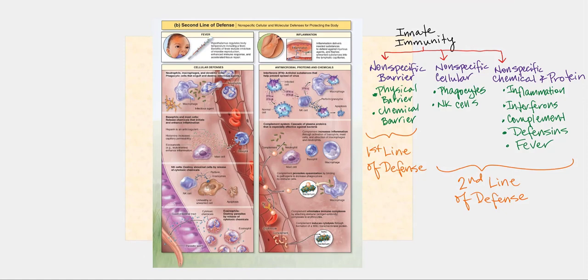This image shows us the second line of defense, both nonspecific cellular and nonspecific chemical and protein defenses. We can see our macrophages — these phagocytes, nonspecific cellular. We also have the basophils and mast cells that are part of our inflammatory response. Our natural killer cells are part of our nonspecific cellular defense. Another phagocytic cell is the eosinophil, involved in parasitic worm infections. We have the interferons, which are the nonspecific chemical and protein defenses, and complement.